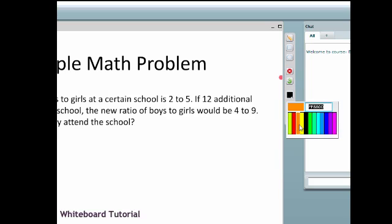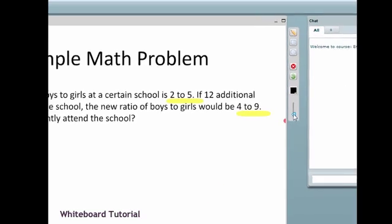So let's do the problem. We're going to show the students who are all connected remotely. We're first going to highlight the two ratios for boys to girls: 2 to 5, and if we add more boys, it's 4 to 9. So these are the key pieces.